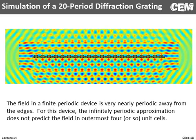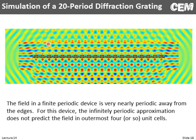Also notice we used a PML around the whole outside. Notice this discontinuity — that's our total field scatter field interface. The PML regions are clipped off so you don't see the wave being absorbed there, but you can definitely see the total field scatter field interface.